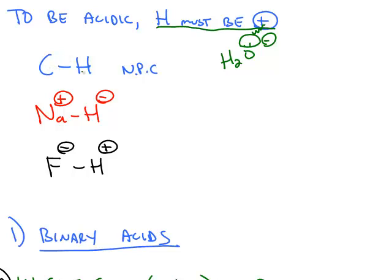So for example, if you had a carbon-hydrogen bond, that bond has no polar character to it. The left side and the right side are basically neutral. So that's a nonpolar covalent bond. The hydrogen is not acidic because it's not positive.